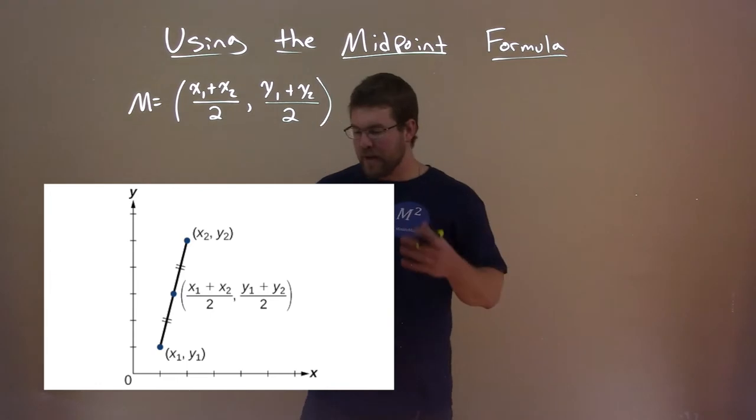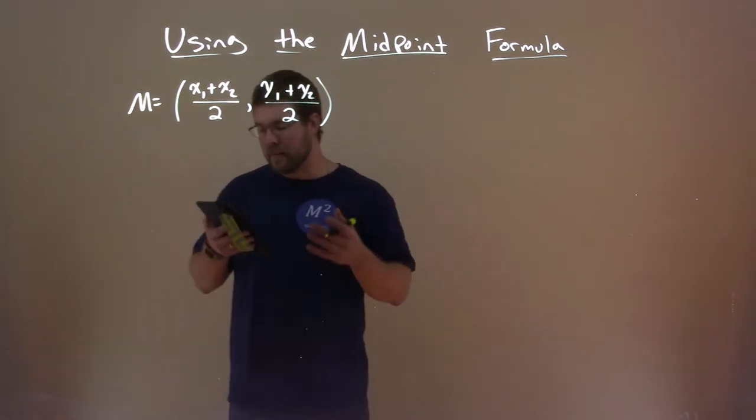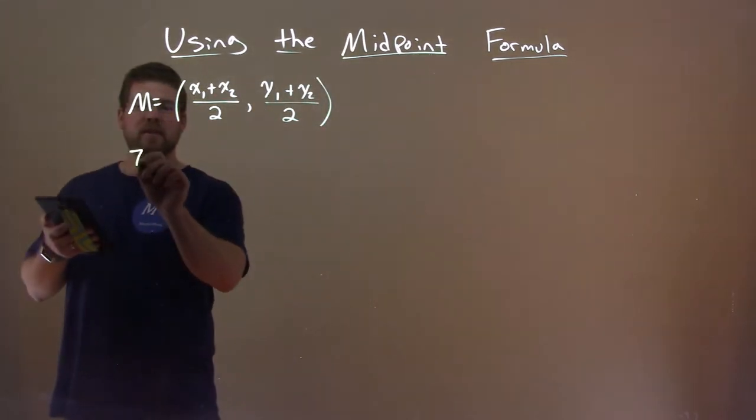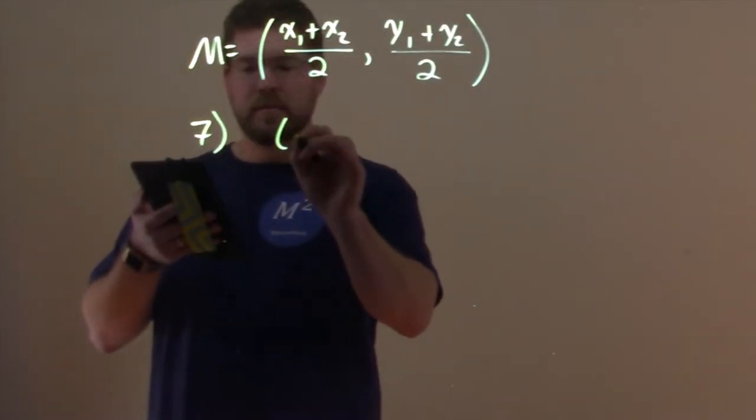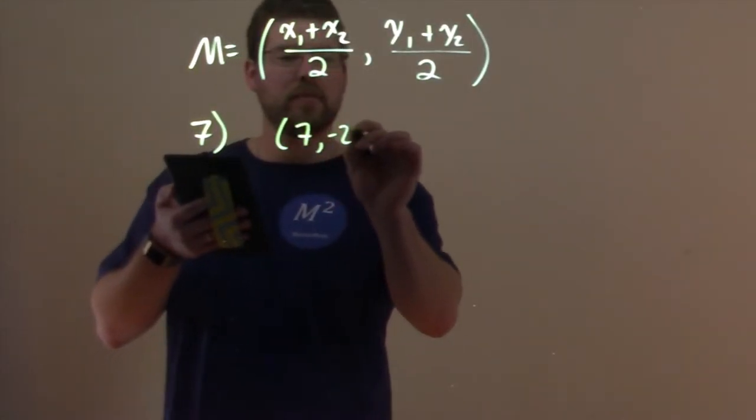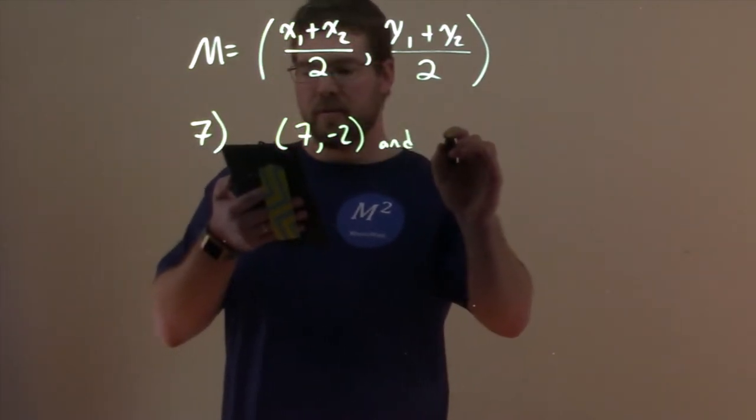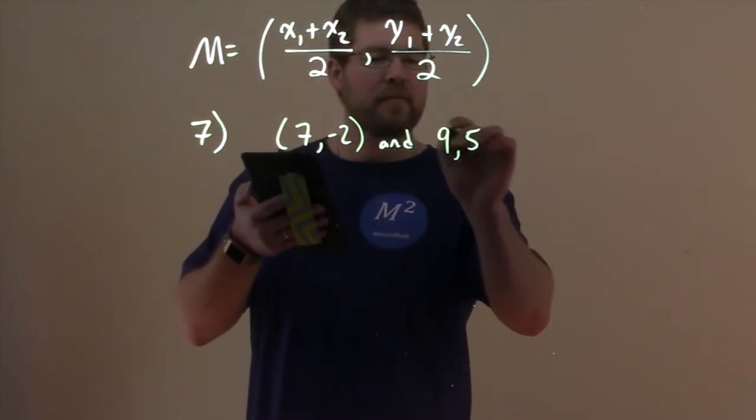So let's go find the midpoint of a line segment. Number seven here, we have a line segment with endpoints 7, negative 2, and 9, comma 5.